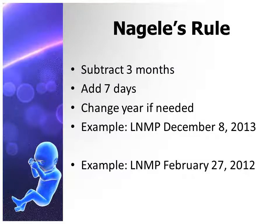To determine when a woman is due, we use Naegele's rule. Determine the first day of the last normal menstrual period, subtract three months, add seven days, and change the year if necessary.